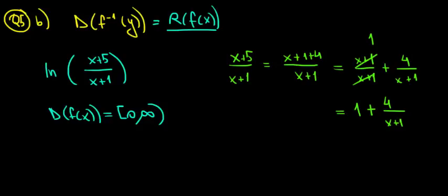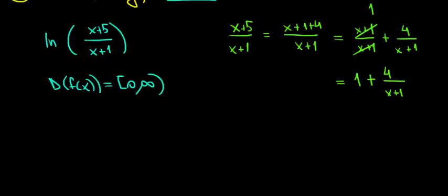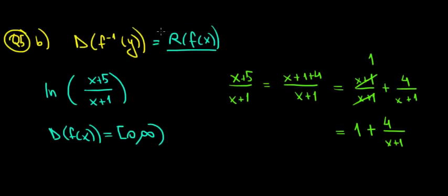Now, this is a more simple way to write our function. And why did we do it? Because in order to find out the range of the original, remember we want to find out the range of the original.